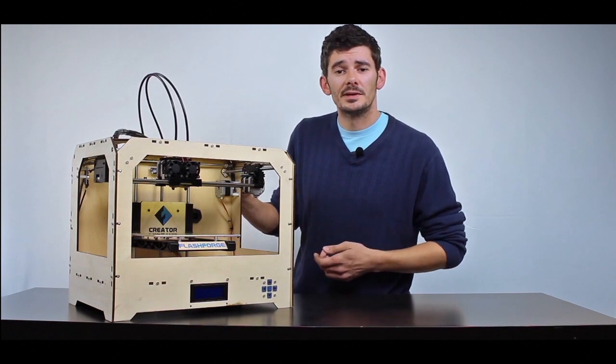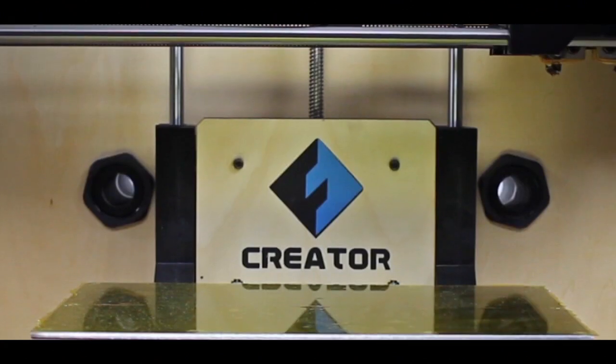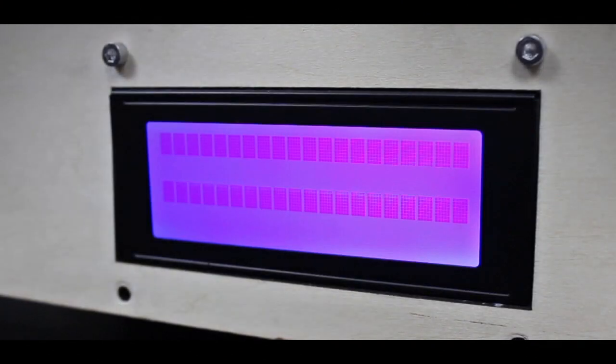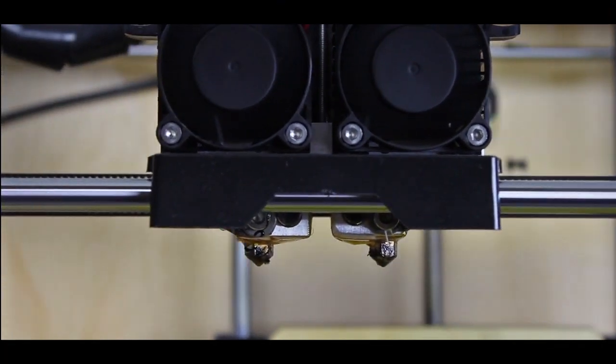Now the Creator retails for just under $1200 from Amazon.com and comes with a large 9x6x6 inch build platform, built-in SD card reader, LCD control panel and dual extruders for multi-coloured or multi-material prints.